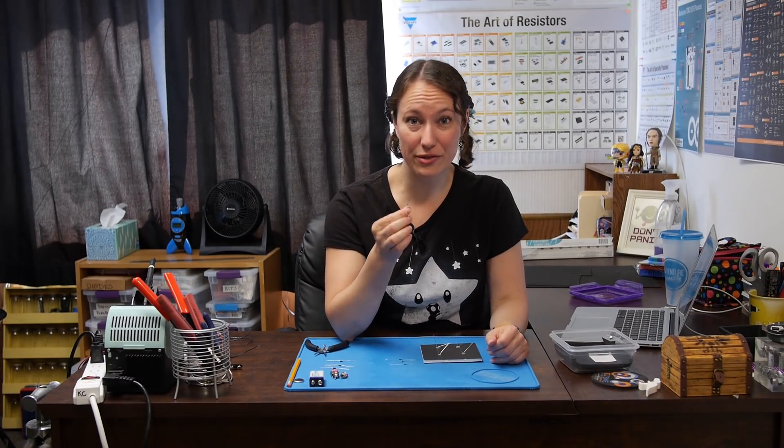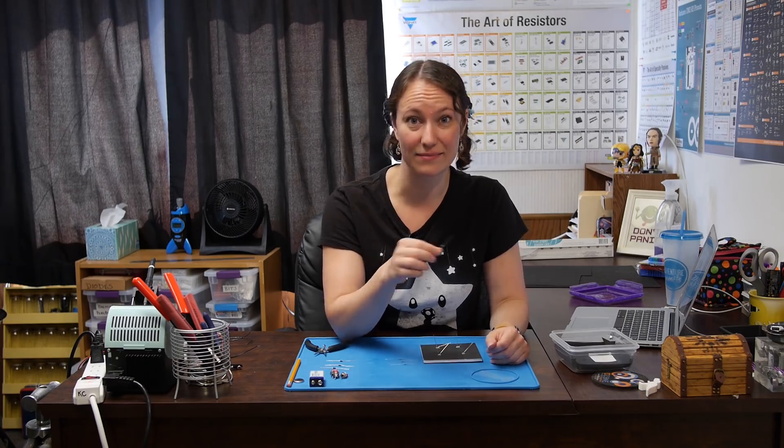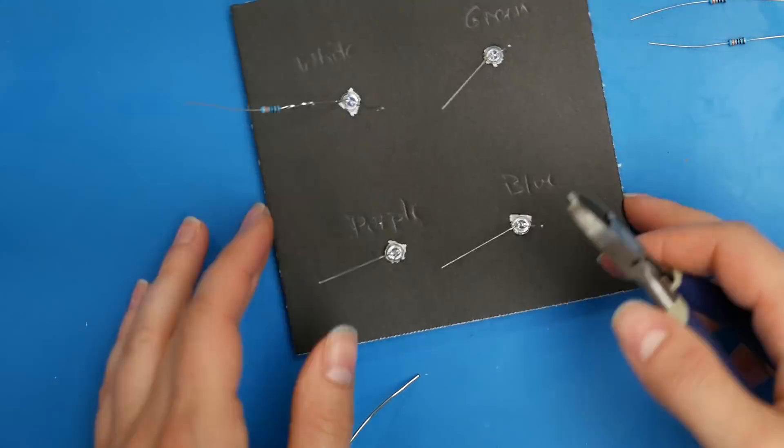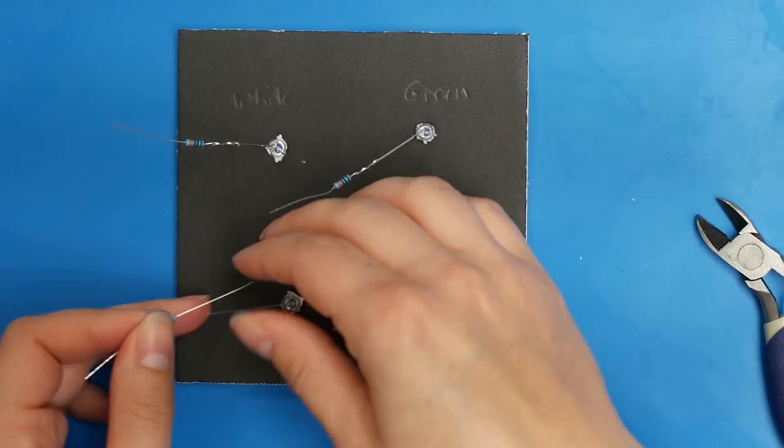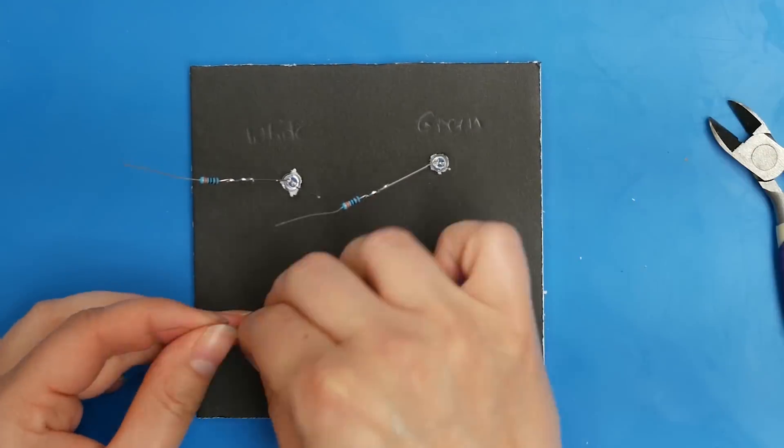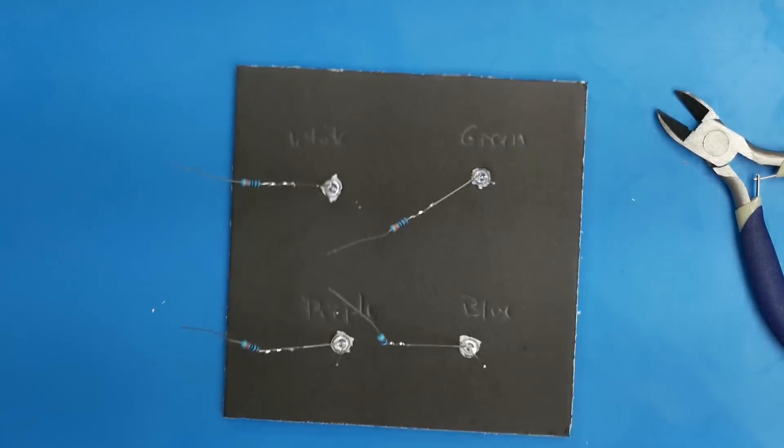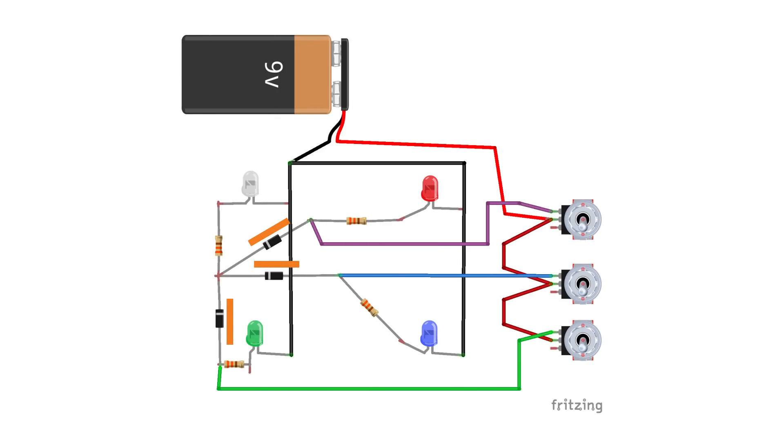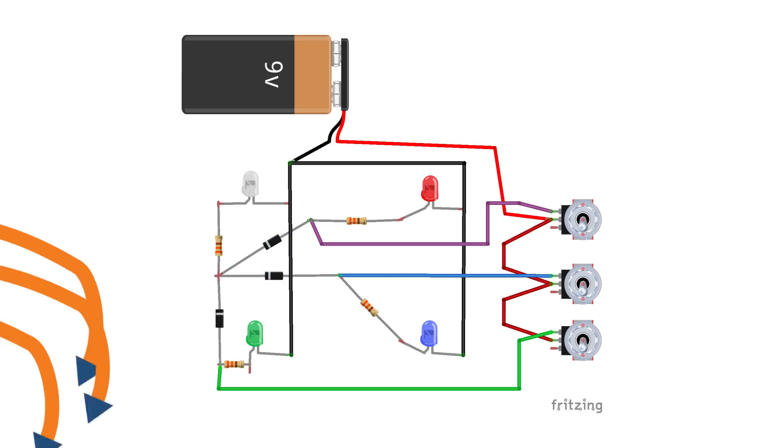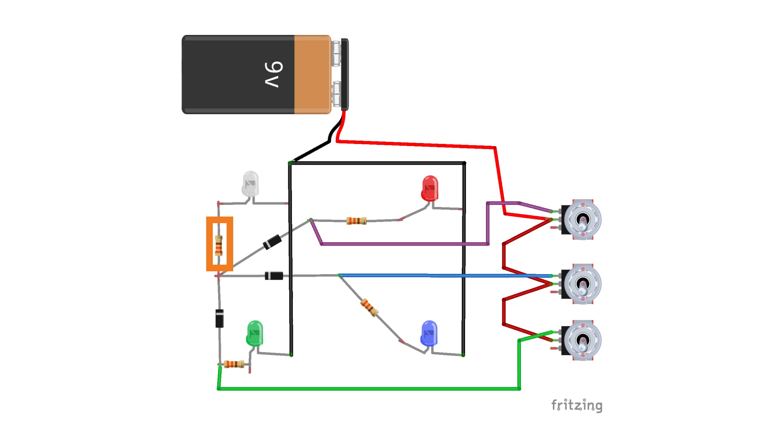Okay, we need to solder one 330 ohm resistor to the anode of each LED. Next we want to connect our diodes. We want to connect all of the cathodes of the diodes, which is the negative end with the line, to the resistor of the white LED. The other ends of the diodes are going to be connected to each of the LEDs. We're going to hook them up to the loose lead of each resistor. And then later, we'll connect a wire from each switch to that joint.